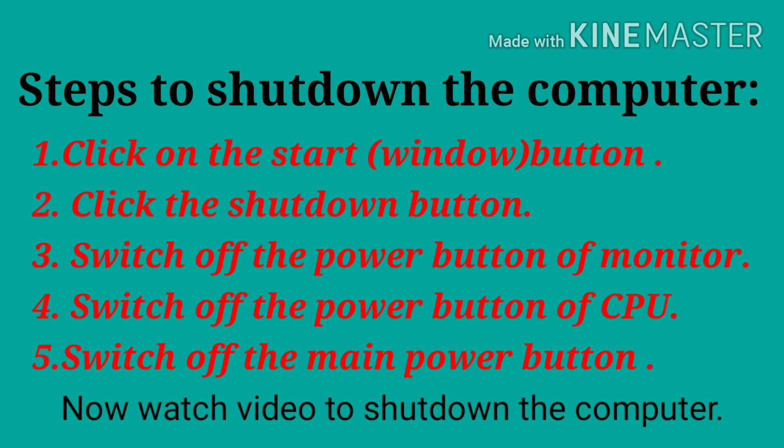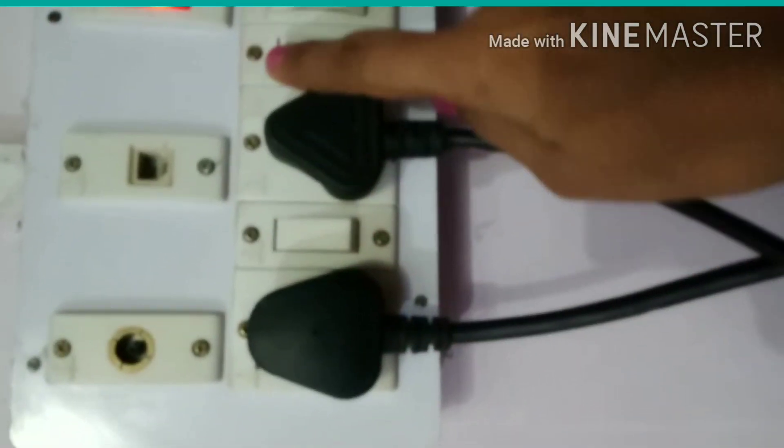Now let us watch a video to shut down the computer. Students, we have to follow the steps to switch off or shut down the computer. First step, you have to click the Start button — this is the Start button, also called the Windows button. Then click on the power button and select Shut Down. Then we have to switch off the power button of the monitor, then the power button of the CPU, and then the main power button.